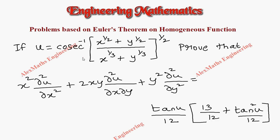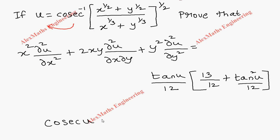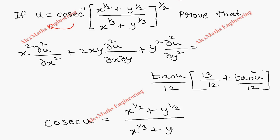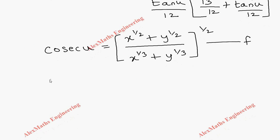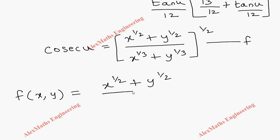Let's take the cosecant inverse to the other side, so it becomes cosecant u. So cosecant u equals (x^(1/2) + y^(1/2)) divided by (x^(1/3) + y^(1/3))^(1/2). Let's take this as the function f of x, y, which is (x^(1/2) + y^(1/2)) divided by (x^(1/3) + y^(1/3))^(1/2).